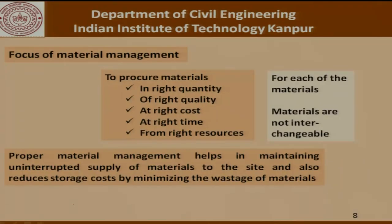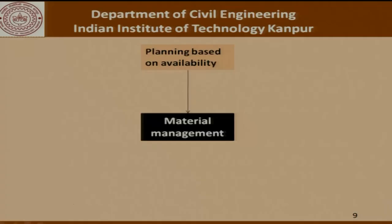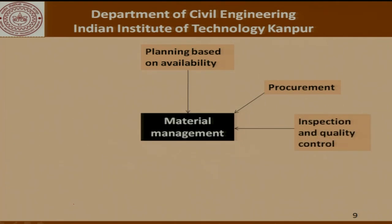Material management has a cost. The inventory — if we buy a lot of cement, for example, which is going to be used later, we have to store it in a godown which costs money. It is better to reduce the inventory cost and reduce the time that your inventory is held, as that minimizes cost as well as wastage. When it comes to material management, there is planning based on availability, procurement procedures, and inspection and quality control.